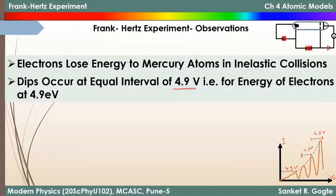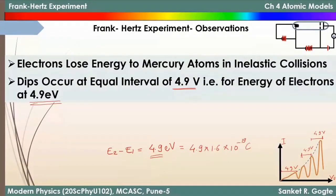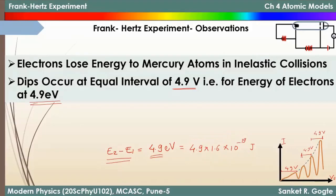We can conclude that there must be two energy levels in mercury atom such that E₂ − E₁ = 4.9 electron volts. In SI units, this energy difference is 4.9 × 1.6 × 10⁻¹⁹ joules. This is the energy at which electrons undergo inelastic collisions, exciting the mercury atoms.